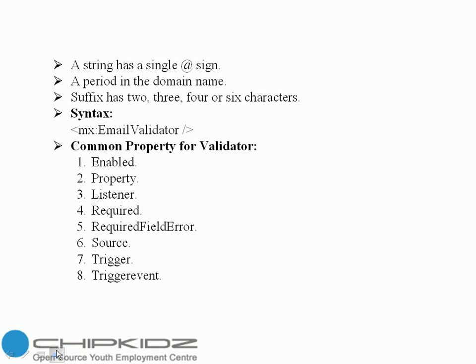Syntax: email validator. Common properties for validate: 1st is enabled, 2nd property, 3rd one listener, 4th one is require, 5th one require field error, 6th one source, 7th one trigger, 8th one trigger event. These are common properties, so whatever you want, you can use these properties.